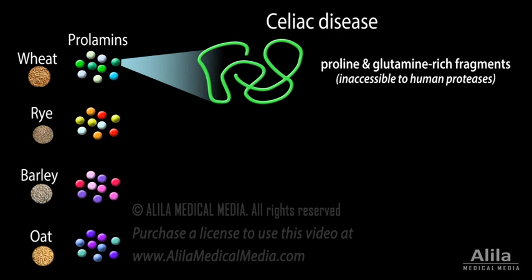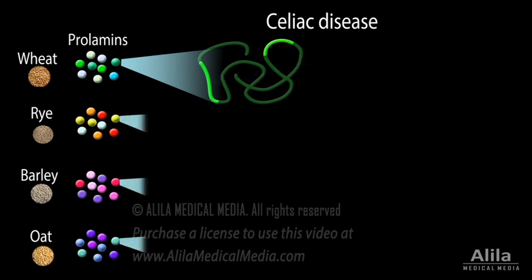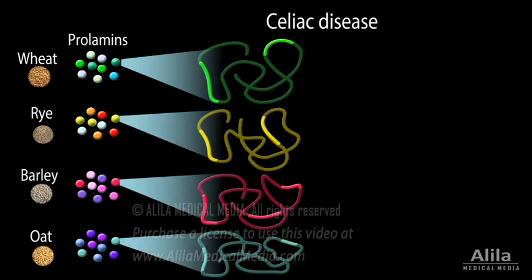Partial digestion of prolimins produces a family of small peptides that can trigger inappropriate immune response in people with celiac disease. These peptides are known as epitopes.